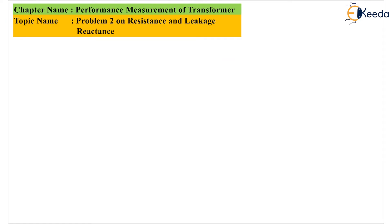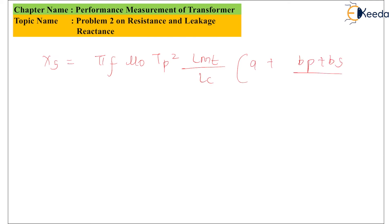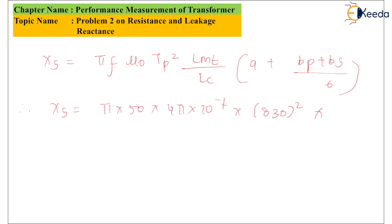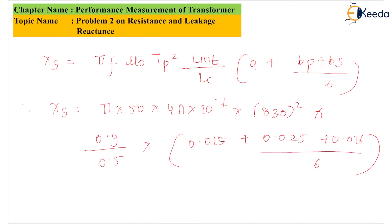Now, the problem states that the LV winding is divided into two parts, one on each side of the HV winding. Therefore the formula becomes: XS = π × f × μ₀ × TP² × (LMT / LC) × (A + BP + BS/6). Substituting the values: XS = π × 50 × 4π × 10⁻⁷ × 830² × (0.9 / 0.5) × (0.015 + 0.025 + 0.016/6). Solving this, the leakage reactance referred to the secondary winding is XS equal to 5.36 ohms.